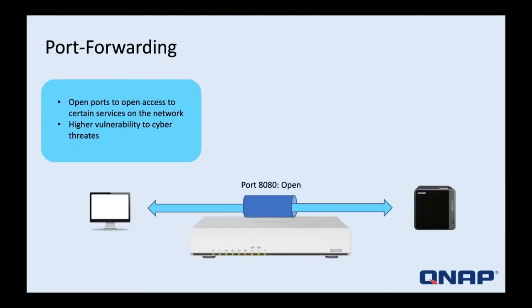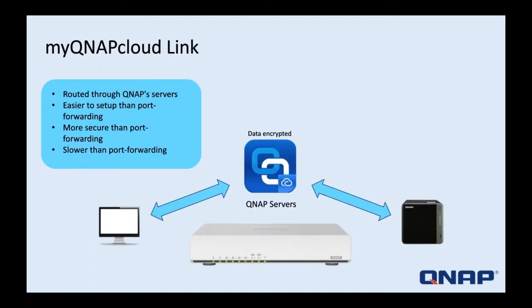Port forwarding is where you open up ports in your router dedicated for certain services, so they can be accessed directly from outside your network. This is typically done on the router, though with UPnP routers you can manage ports within the NAS OS, which adds risk. Opening ports is a higher vulnerability method — it makes the NAS more vulnerable to ransomware attacks. Recent ransomware has even been able to delete snapshots, so it's important to understand the added risk.